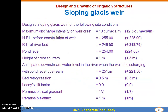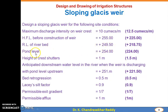This is the data required to design the sloping glacis weir. Values in bold brackets are for homework. Design data: maximum discharge intensity on weir crest = 10 cumecs per meter; High Flood Level before construction = 255.00 m; RL of river bed = 249.50 m; Pond level = 254.00 m; height of crest shutter = 1 m; anticipated downstream water level when weir discharges at pond level = 251 m; bed retrogression = 0.5 m; Lacey's silt factor = 0.9; permissible exit gradient = 1 in 7; permissible afflux = 1 meter.